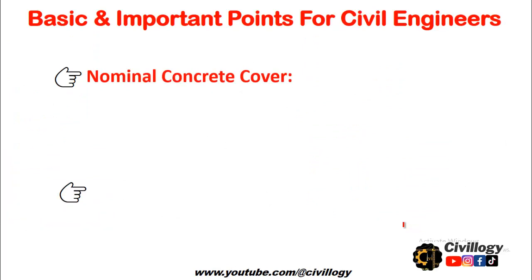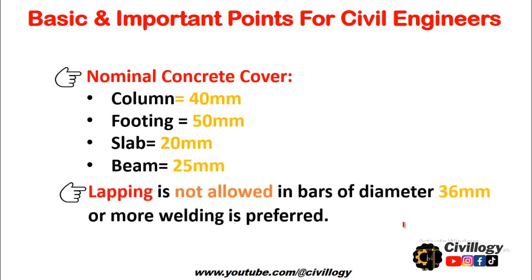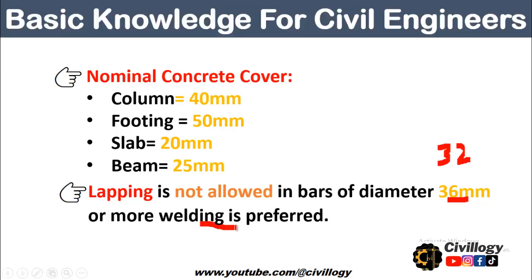Concrete covers are provided to protect the steel from catching rust. The cover should be equal to 40 millimeters for columns, 50 millimeters for footings, 20 millimeters for slabs, and 25 millimeters for beams. The most important point regarding lapping: lapping is not allowed in bars of diameter 36 millimeters or more. Welding is preferred if the bar diameter is more than 32 millimeters - so if the diameter of a bar is greater than 32 millimeters, welding will be preferred.